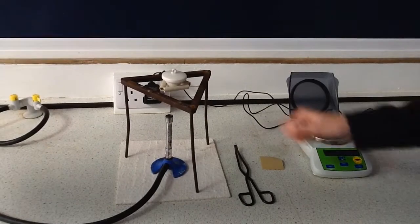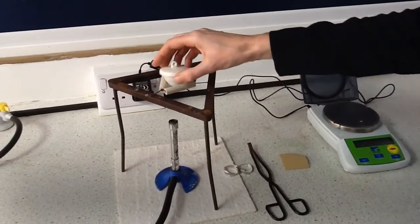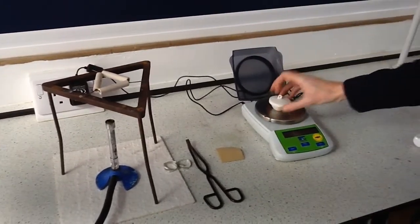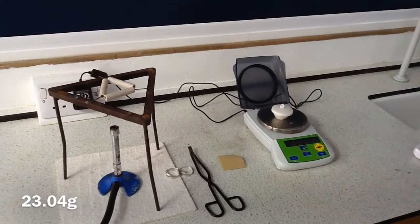So we start off with the crucible and the lid and we take its mass. The mass is 23.04 grams.